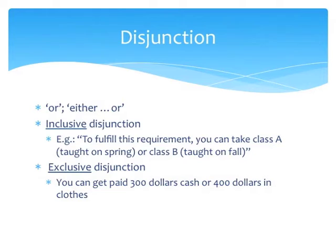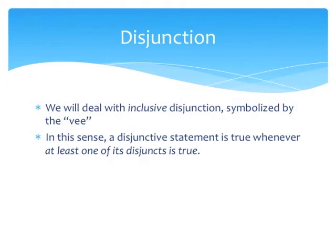So again, in propositional logic, we interpret the disjunction, symbolized by the V, as inclusive. So a disjunctive statement is true whenever at least one of the disjuncts is true.